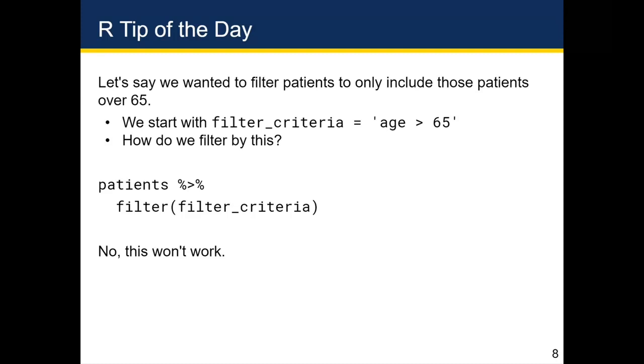So to make dplyr think that we actually had typed in patients then filter age greater than 65 without quotes, we have to parse the expression filter criteria, which just tells R pretend we had typed in the age greater than 65 and get rid of the quotes.